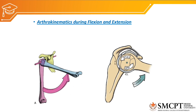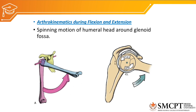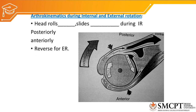The arthrokinematic movements include sliding, spinning, and rolling. During flexion and extension, the head of the humerus will simply spin on the glenoid cavity. That is the arthrokinematic movement during flexion and extension — a simple spinning motion of the humeral head on the glenoid fossa.